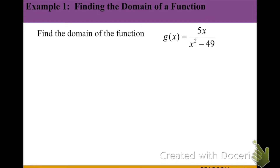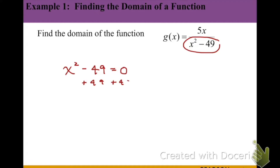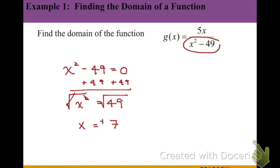For example, when we're trying to find the domain of f over x squared minus 49, we note this is a fraction, so we need to find the excluded values that make the denominator zero. We set the denominator equal to zero: x squared minus 49 equals zero, add 49 to the other side, then square root both sides, which gives us 7. When we take the square root, we take both the positive and negative root, so positive 7 and negative 7 are the excluded or restricted values.